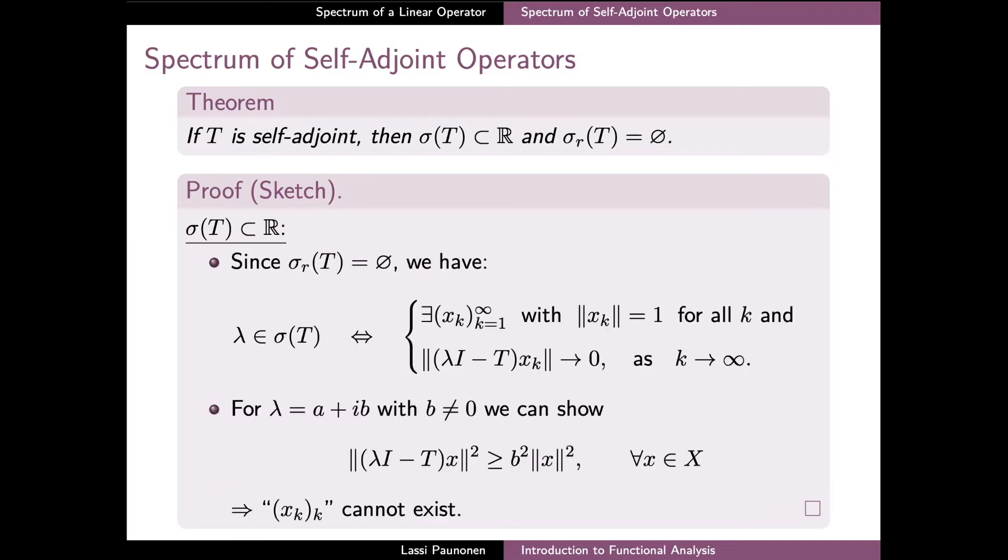The proof for the property that the spectrum of a self-adjoint operator belongs to the real axis is left as an exercise in the lecture notes, but we can quickly discuss its main parts here. Since we already proved that T cannot have any residual spectrum, our earlier results can be used to argue that any complex value λ is a spectral point of T,